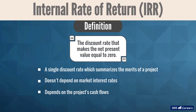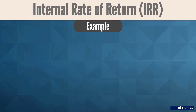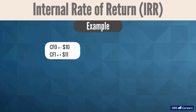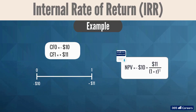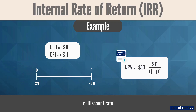Let's illustrate the idea with the following example. A project costs $10 to be realized today and pays $11 in one year. Here's a timeline for that. We know that the net present value of the project can be calculated as minus $10 plus $11 divided by 1 plus R to the power of 1, where R is the discount rate.